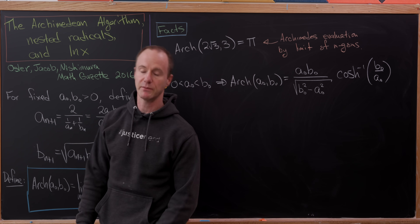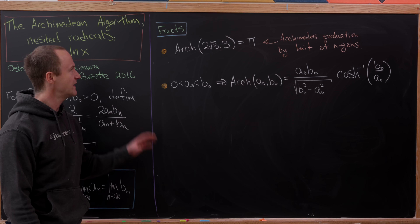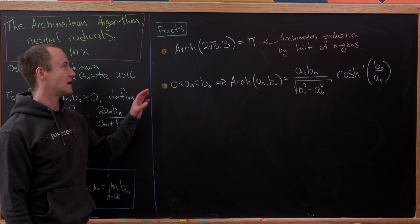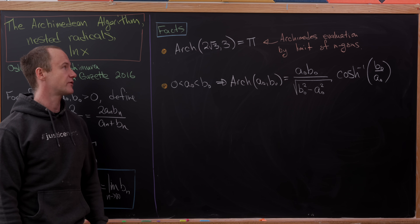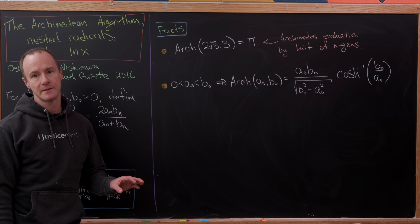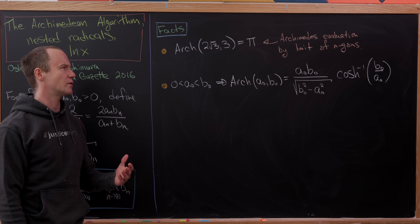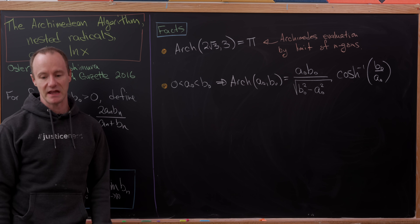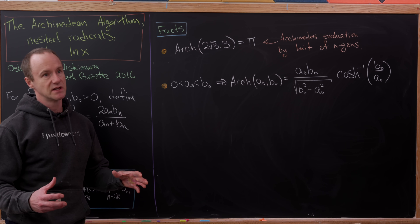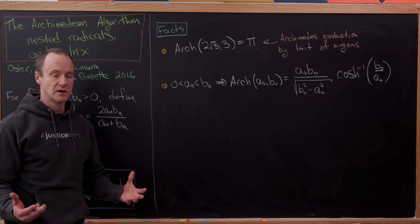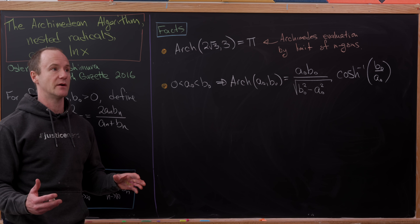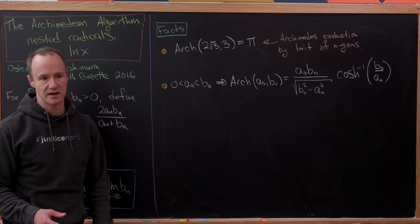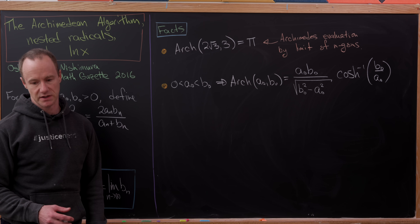The Archimedean mean of the two starting numbers will be the limit of either the a_n or b_n sequence — those limits are equivalent. As a nice fact, the Archimedean mean of 2√3 and 3 gives π, which is equivalent to the way Archimedes evaluated π by looking at limits of n-gons, since n-gons limit to circles, and you can calculate an exact value for the circumference of an n-gon using the Pythagorean theorem.